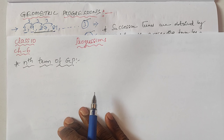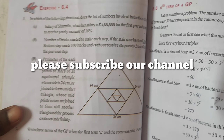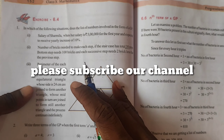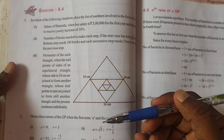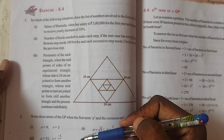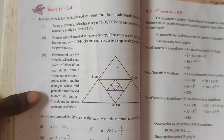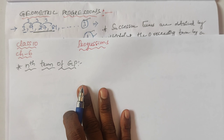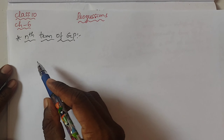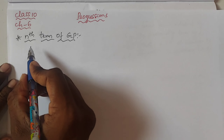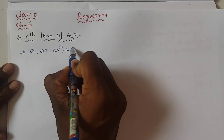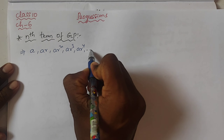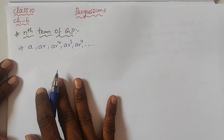Hello everyone, welcome to our channel. We are discussing Class 10th Chapter 6, Progressions. In a previous class we completed Exercise 6.4, which is about the general form of geometric progressions. If you missed that class, the link is in the description. Today we will discuss the nth term of geometric progression. We know that a, ar, ar², ar³, ar⁴ and so on is the general form of GP.